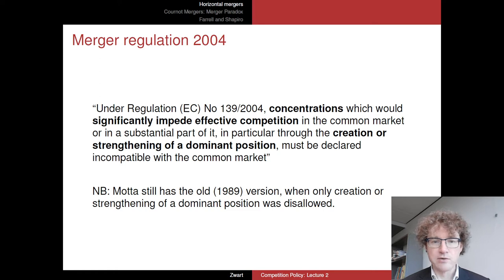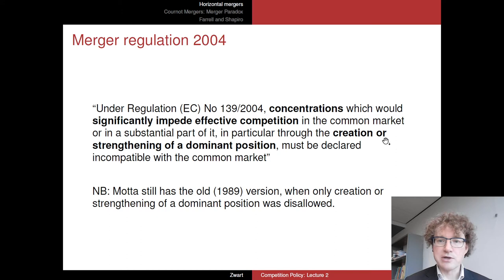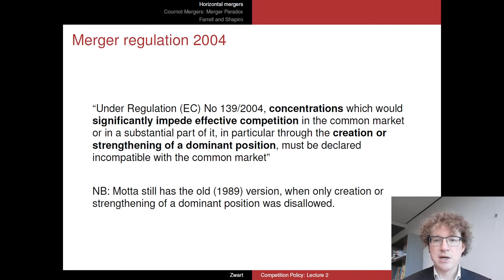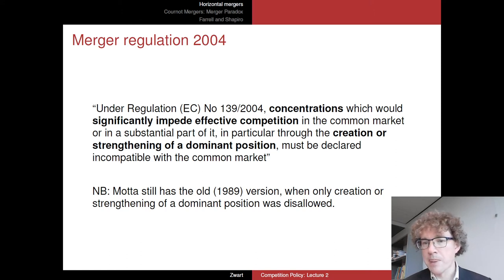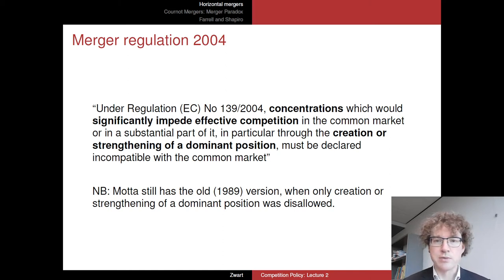In the book by Motta you will see the old version dating back to 1989. The new addition here is 'significantly impede effective competition.' The old regulation referred only to the creation or strengthening of a dominant position, but that led to uncomfortable situations where mergers creating a strong duopoly or oligopoly could not be legally forbidden. The EC tried to act on this but was called back by the courts, and in response the regulation was updated to also include mergers to oligopoly.